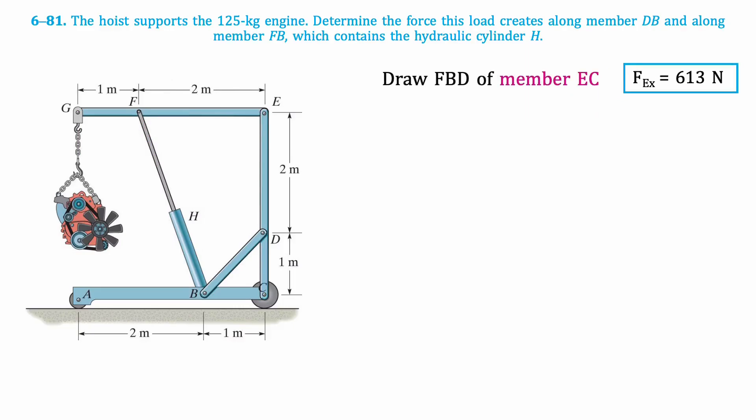Now we'll draw the free body diagram for member EC. We'll have both X and Y components at point E. Remember to reverse their directions compared to those components chosen for member GE, since this is a different member. At point D, there is the force acting along member DB. We can split this force into components to make it easier to solve for later on. At C, there is a pin, so we will have X and Y components.